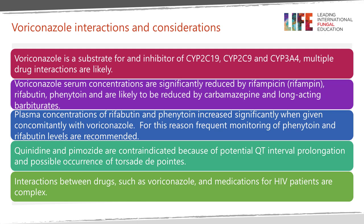Plasma concentrations of rifabutin and phenytoin are also increased significantly when given with voriconazole. TDM is really important when using such drugs with patients, especially if antiepileptics are going to affect epilepsy control. There are other drugs used around the world like quinidine and pimozide which are contraindicated because of potential QT interval prolongation, which can lead to the occurrence of torsades de pointes. It is really important to take all of these into consideration, including any drugs that can prolong the QT interval.